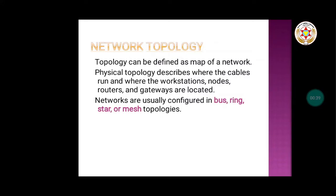Topology is essentially the geometrical arrangement of a network — how the different physical devices are connected to each other. The network can have different types of equipment: cables, routers, and other network devices. The fashion in which they are arranged and deployed, that representation and setup, is called the topology.